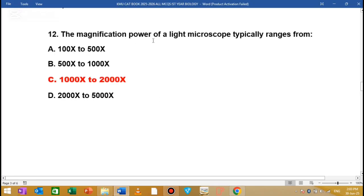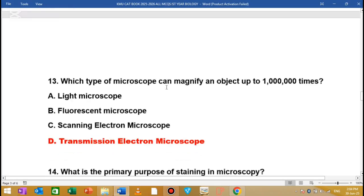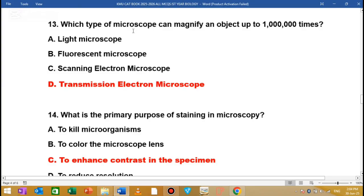The magnification power of a light microscope typically ranges from dash. The light microscope can magnify an object up to one million times.